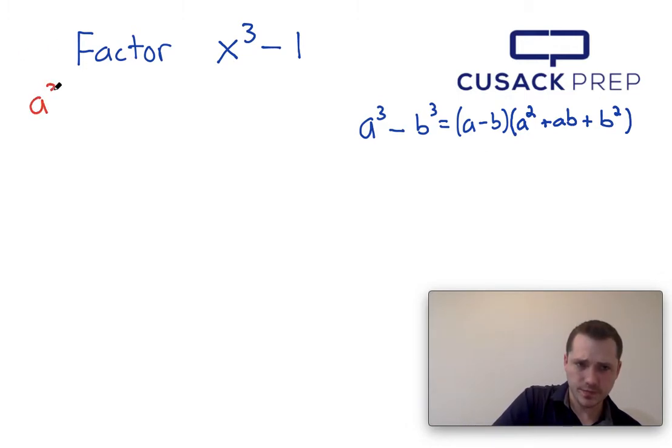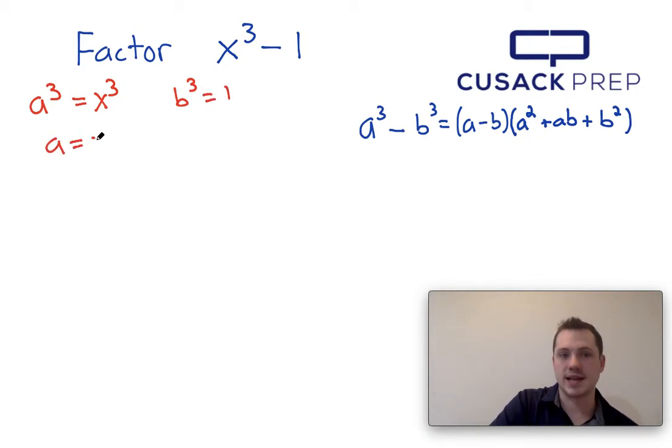So a cubed must be x cubed because that's the term that comes first and b cubed must be 1. This implies that a is x and that b is 1.